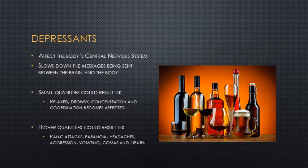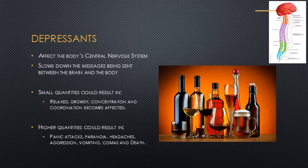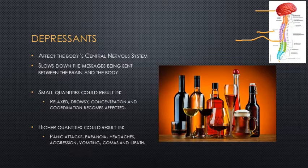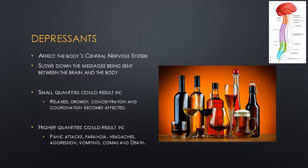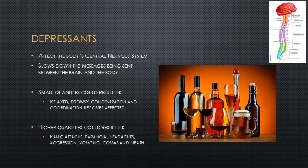Firstly, we've got depressants. Depressants affect the central nervous system — that's essentially your brain and your spinal column. Your brain sends messages down the spinal column and off to the different parts of your body — for example, if you decide you want to kick something, your brain sends a message down to your foot and away you go. The problem with depressants, though, is that they slow down those messages, which is great when you're in pain and need pain medication, but not so great when you're trying to do things like drive a car and need to react quickly to what's in front of you. So depressants have got their good and their bad side.